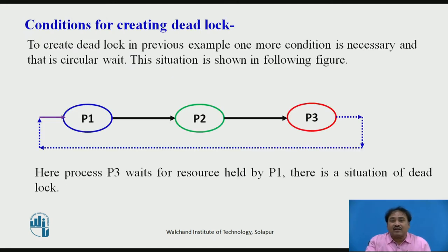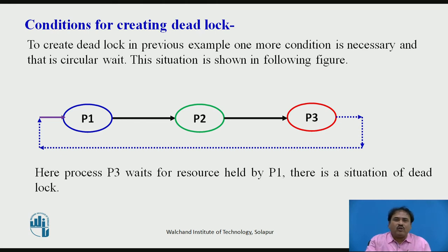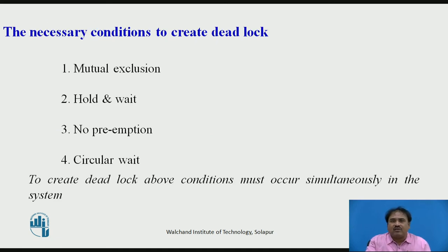Now what condition is required to create deadlock? I have modified the diagram slightly. In this case, P1 waits for a resource from P2, P2 waits for a resource from P3, and P3 waits for a resource from P1. Now there is a loop present here, which is normally called a circular wait condition. P2 will not get executed unless P3 is executed, but P3 is also waiting for resources to be released by P1. So none of the available processes get executed at any time. This is the condition we call a deadlock.